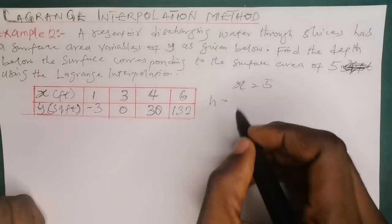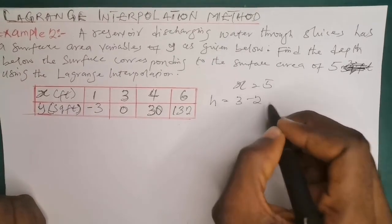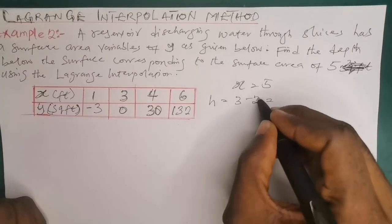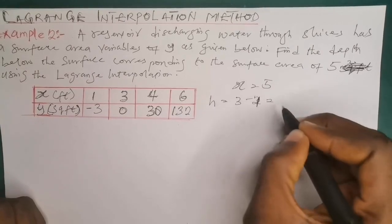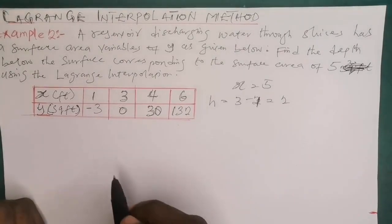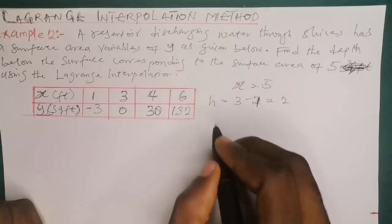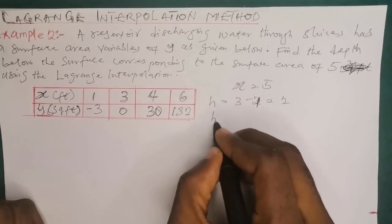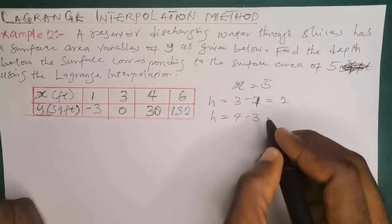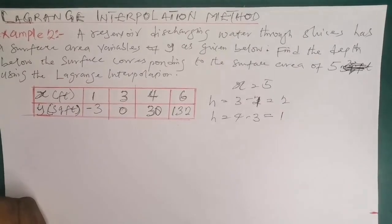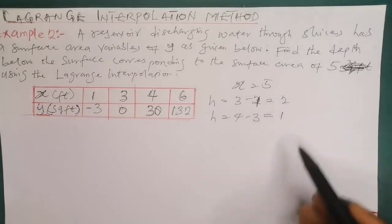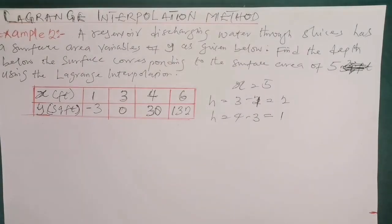Looking at the values: h = 3 minus 1 = 2, but h = 4 minus 3 = 1. Since 2 does not equal 1, the interval is not the same. Because the intervals are unequal, we are going to employ the Lagrange interpolation method. I will drop a link to the first video on Lagrange interpolation in the description.